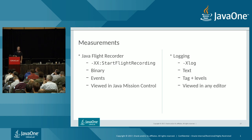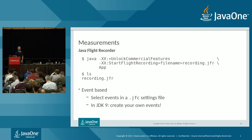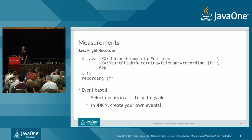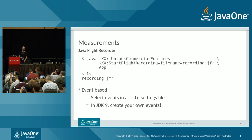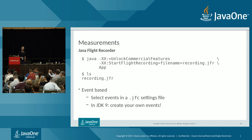With Flight Recorder in JDK 9, you write -XX:UnlockCommercialFeatures and then -XX:StartFlightRecording, giving it a filename like recording.jfr, then run your application. After the application finishes, you'll find the recording.jfr file in the same directory.